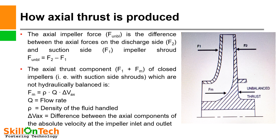In this equation, Q is the flow rate, ρ (Rho) is the density of the fluid handled, and ΔVax is the difference between the axial components of the absolute velocity at the impeller inlet and outlet.